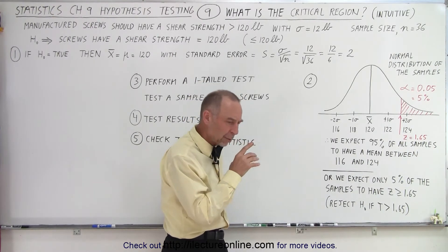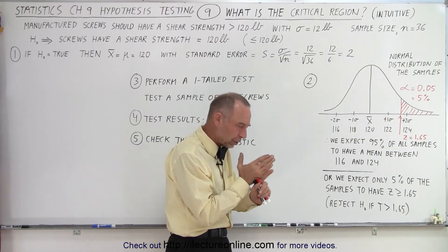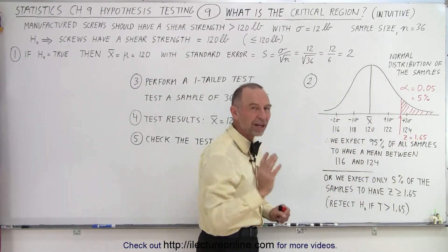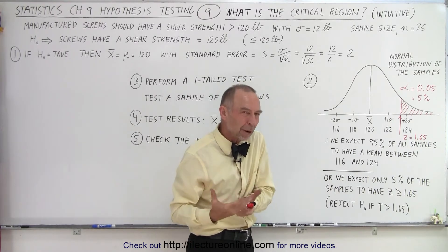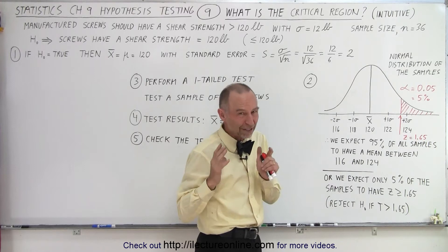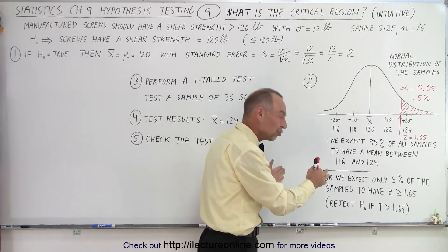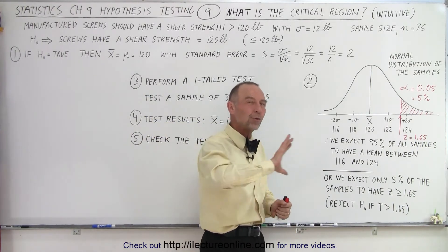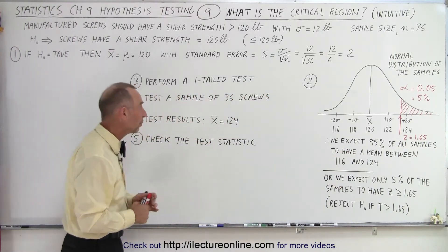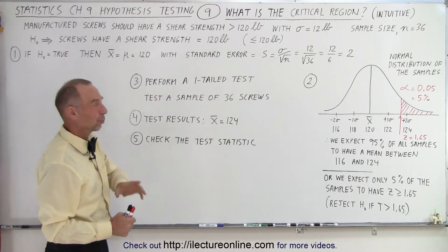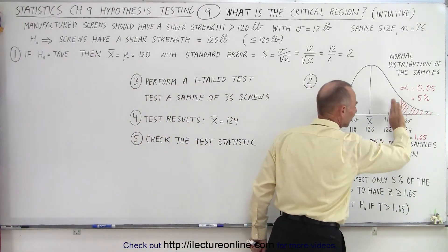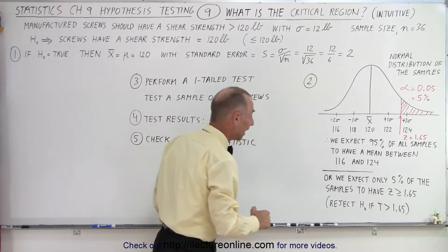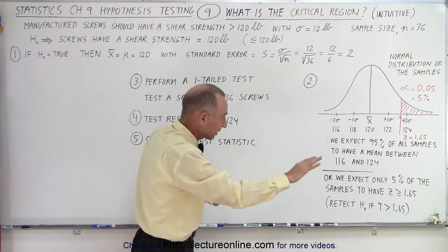In other words, if we take a sample of 36 screws, we look at the test statistic, and if it falls in the critical region, we're going to reject the null hypothesis and we have a 95% probability that that was the correct decision — meaning we have a 95% probability of believing the shear strength of the screws is sufficient and greater than 120 pounds. So we perform what we call a one-tail test. We don't want to look at both sides — we put all 5% on one side because we want a 95% probability that we can reject the null hypothesis and confirm the shear strength is greater than 120 pounds.